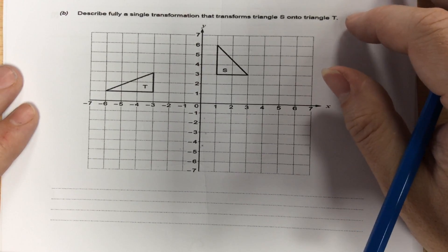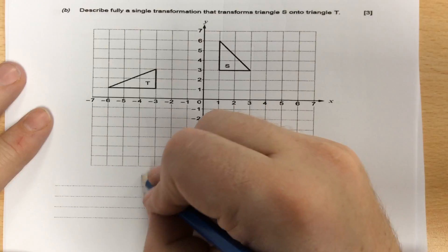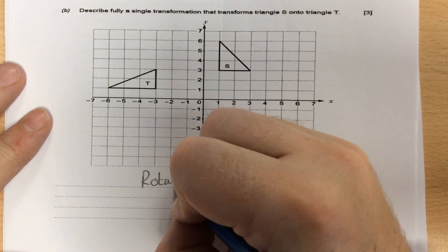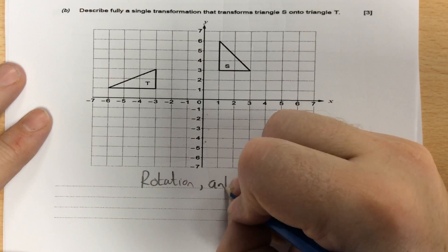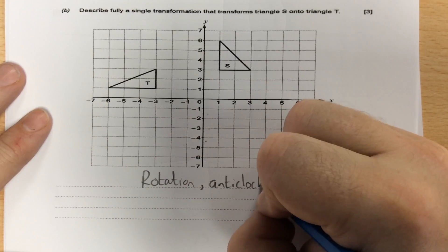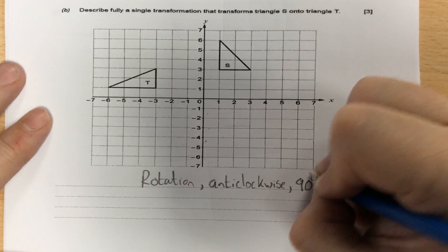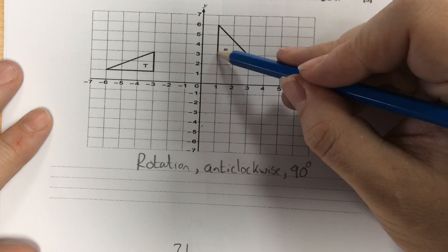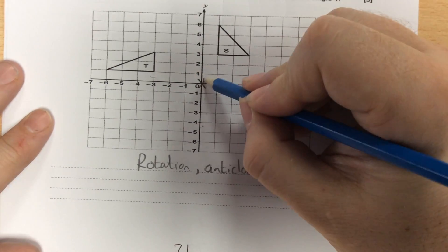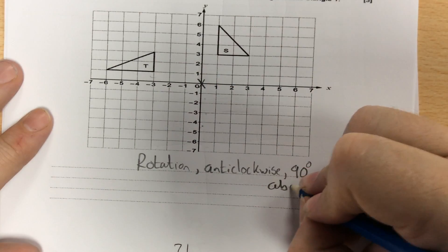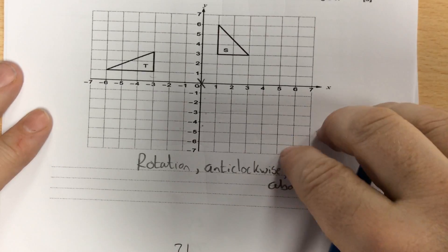Describe this single transformation. Looking at it, it's been rotated — it's been twisted. It's gone from S to T, anti-clockwise, 90 degrees. And because it's 1, 3 to 1, 3, it's about the origin. So it's been rotated 90 degrees anti-clockwise about the origin.